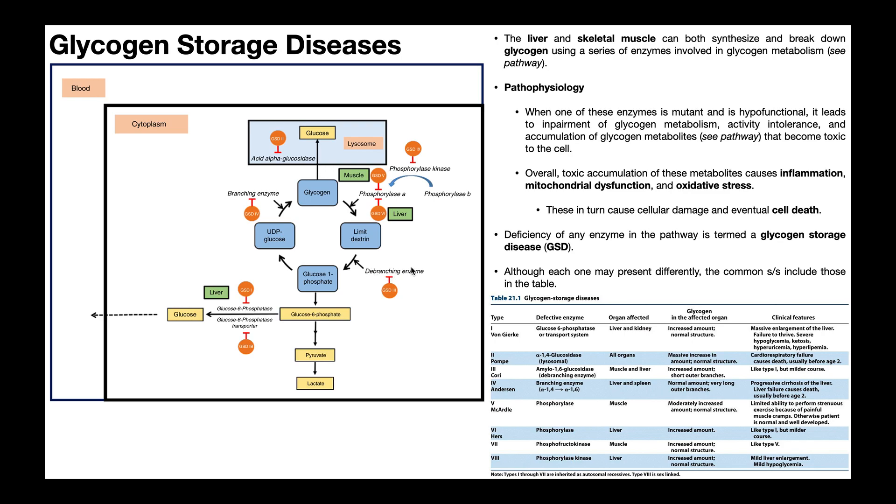That leads to an impairment of glycogen metabolism and an accumulation of any one of these metabolites. Take, for example, this debranching enzyme. This enzyme converts limit dextrins into glucose 1-phosphate. If this enzyme is deficient, we're not going to be able to convert limit dextrins into glucose 1-phosphate. Not only will glucose 1-phosphate go down, but we'll accumulate these limit dextrins because we're not able to transform them. When you start accumulating this metabolite, it builds up and eventually gets to the limit of toxic accumulation, leading to inflammation of the cells, mitochondrial dysfunction, and oxidative stress. All of these things cause cellular damage and eventually cell death.